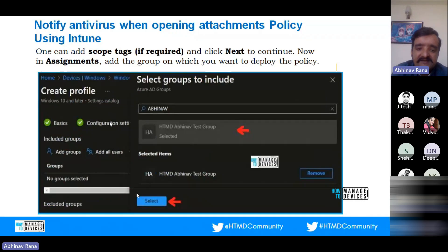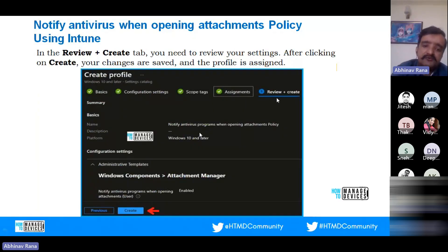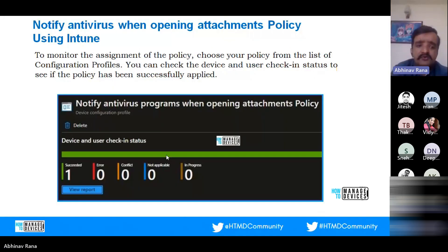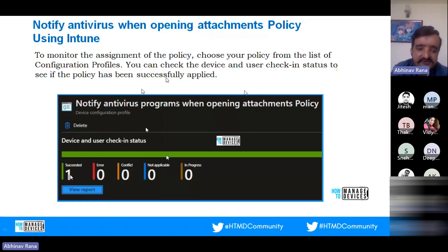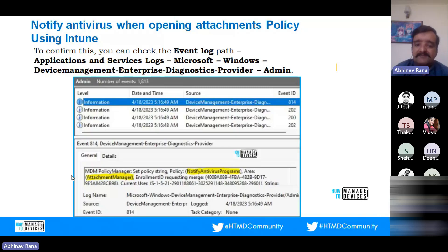After closing the Settings Picker, the selected setting appears in the Configuration Settings tab — enable it. This will ensure that whenever a user tries to download an attachment, the antivirus program is notified and will scan it. Next, select the group on which you want to deploy this policy — for example, a test group. In the Review + Create tab, verify all settings, then click Create. To monitor the profile, go to the profile list and check the device and user check-in status.